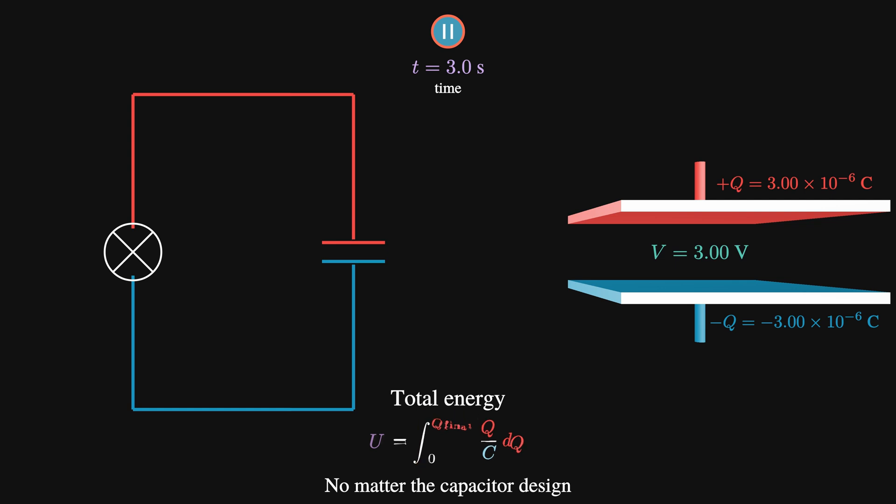If we now integrate this, we find that the energy is simply a half times Q squared over C. And if we apply the limit, we get a half Q final squared over C. For neatness, we'll just write Q final as Q, so we can say the energy for any amount of charge in the plates Q is equal to this.